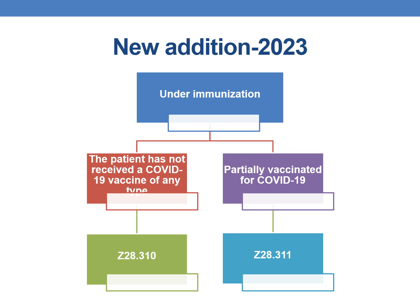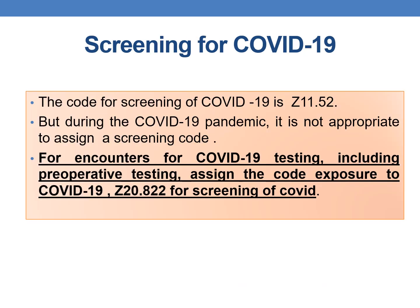Now let us discuss the new additions for 2023. One more guideline has been added under immunization codes. For patients who have not received any type of COVID-19 vaccine, assign code Z28.310. For patients who are partially vaccinated for COVID-19, assign Z28.311. These two are the new codes added for 2023. Regarding screening for COVID-19: the code is Z11.52, but during the COVID-19 pandemic it is not appropriate to assign a screening code. For encounters for COVID-19 testing, including pre-operative testing, assign the exposure to COVID-19 code Z20.822.